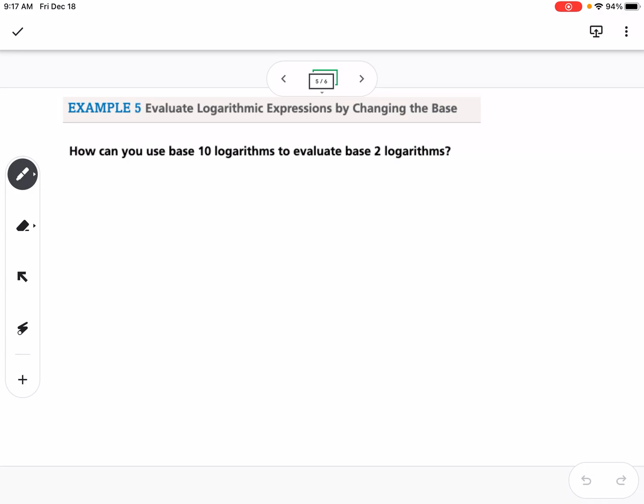Okay, so example 5 is evaluate logarithmic expressions by changing the base. So how can you use base 10 logs to evaluate base 2 logarithms? So if I have something like log base 2 of 3, I'm going to switch to the calculator for a minute, and I am going to show you how to type this in the calculator, but change of base formula says that we have, we can change this into log base 10 or log base e, which are both buttons on your calculator. So we could write this as log of 3 divided by log of 2.